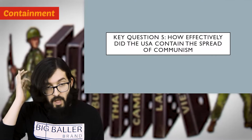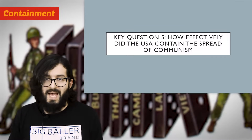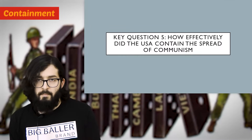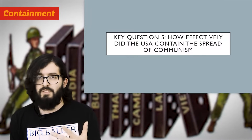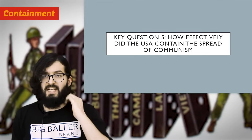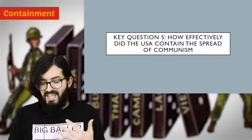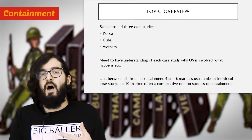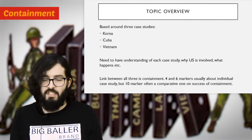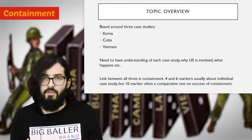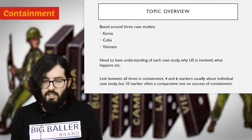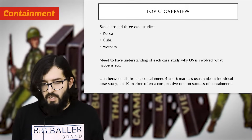The last topic was about the causes of the Cold War and how it developed. Towards the end of that period, the USA developed this doctrine of containment. This topic basically looks at three key case studies of the USA attempting to contain communism: the Korean War, the Cuban Missile Crisis, and the war in Vietnam.